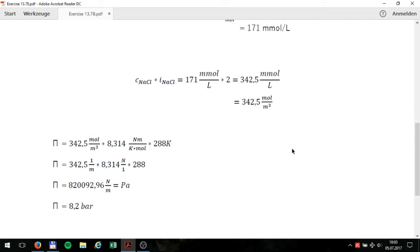Because I have determined now all relevant values for the calculation of the osmotic pressure, we are able to do this with the above-mentioned formula. The formula is p equals 342.5 mol per cubic meter multiplied by 8.314 Nm divided by Kelvin multiplied by mol, and this is multiplied by 288 Kelvin.